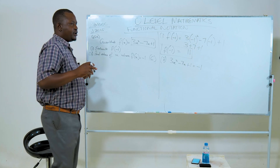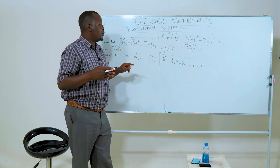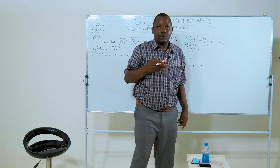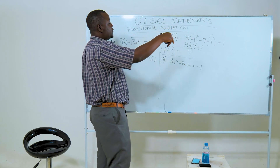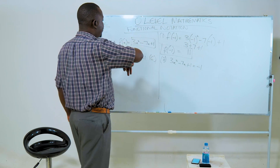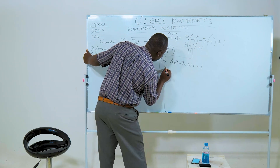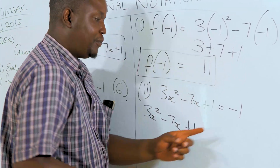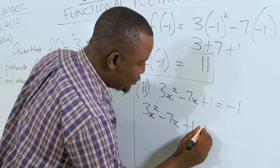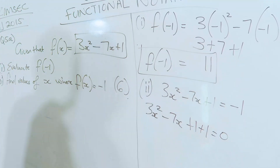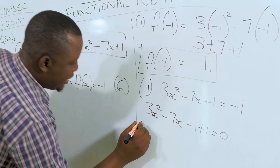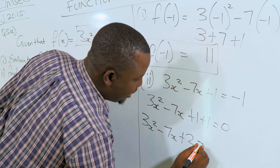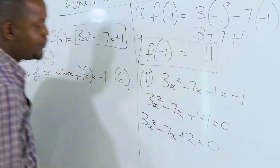In order to solve a quadratic equation, first and foremost we need to equate it to zero. We are going to take negative 1 from the right side and bring it to the left side of the equal sign, so it becomes plus 1. This gives us 3x squared minus 7x plus 2 equal to zero.